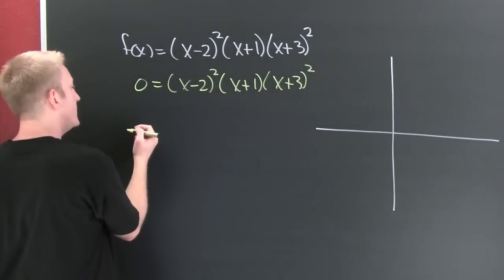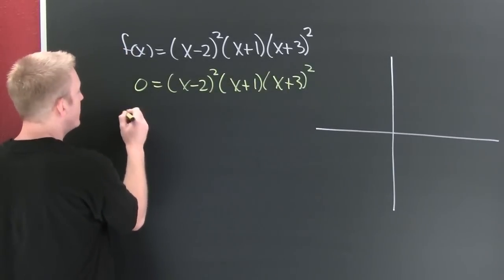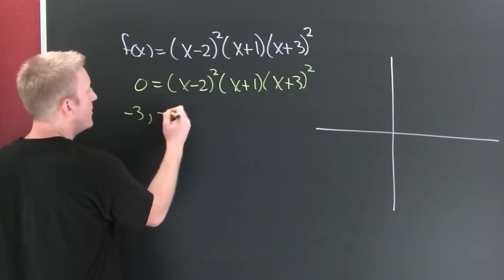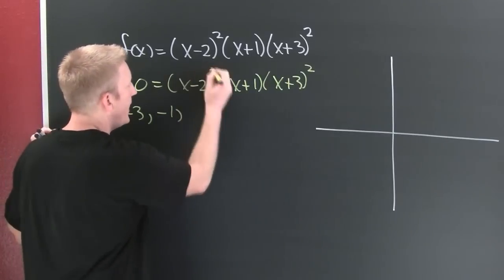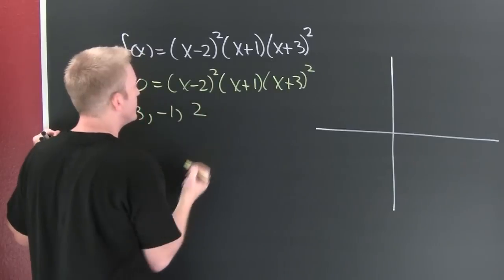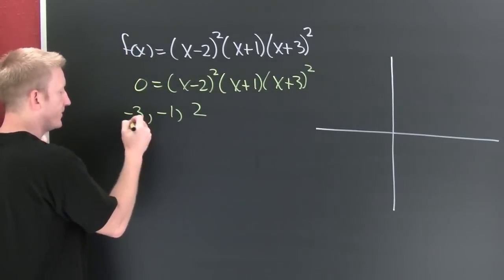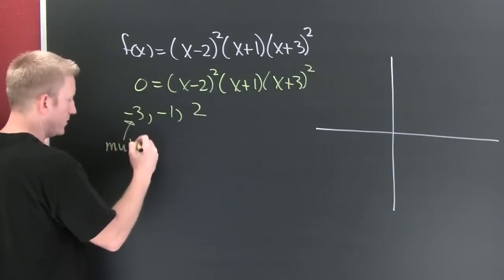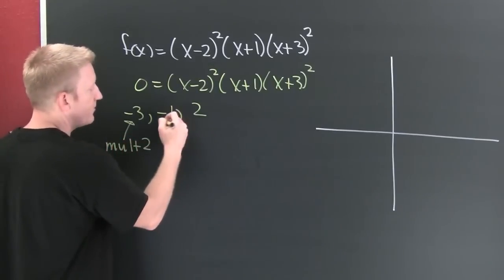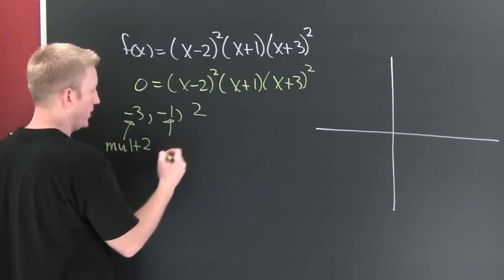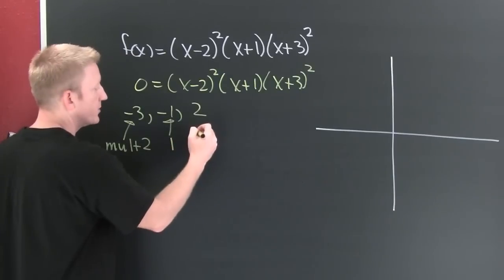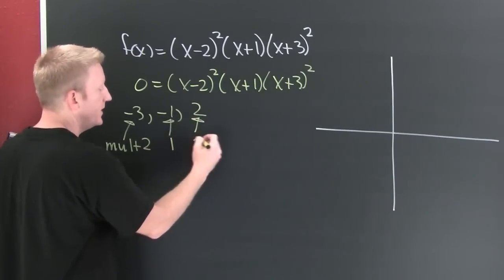The zeros of the factors. I'm going to have a zero at -3, -1, and 2. What is the multiplicity of -3? Multiplicity 2. What's the multiplicity of -1? It's 1. And what's the multiplicity at 2? It's 2.